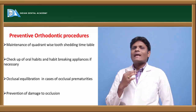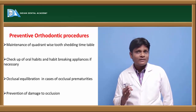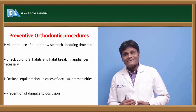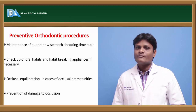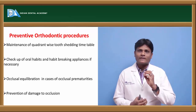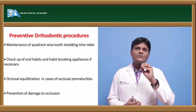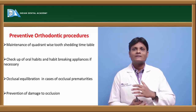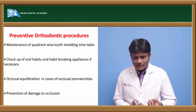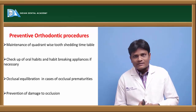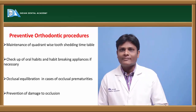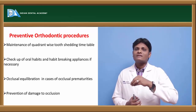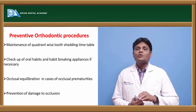Abnormal oral habits are considered normal until a certain age in children. If those habits do not resolve by themselves and are carried out during late childhood, they will lead to malocclusion. Whenever a habit is deemed abnormal, it is always better to control it as early as possible to avoid any deleterious effects on developing orofacial structures. In children with abnormal oral habits like tongue thrusting, tongue sucking, mouth breathing, or lip biting, it is always better to control the habit early.